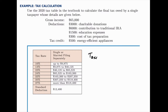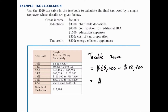So we'll use the standard deduction and subtract that from the gross income to get the taxable income. The taxable income here will be their gross income, $65,000, minus the standard deduction, $12,400, which works out to $52,600. That's their taxable income.